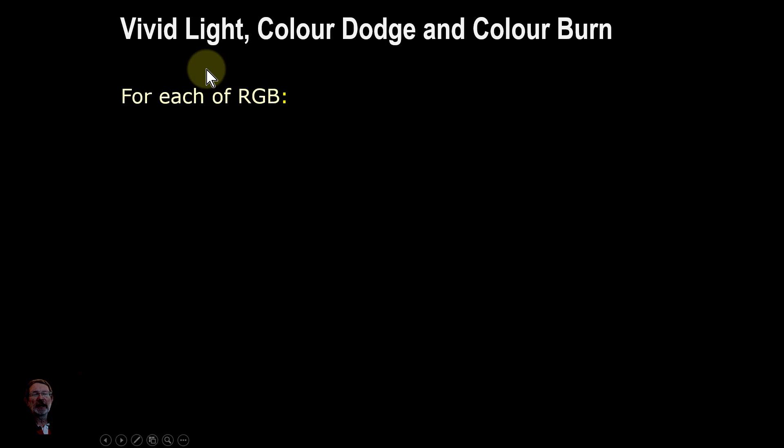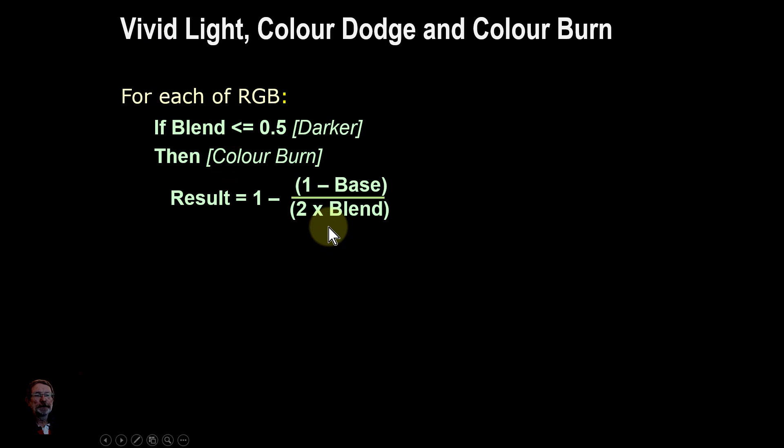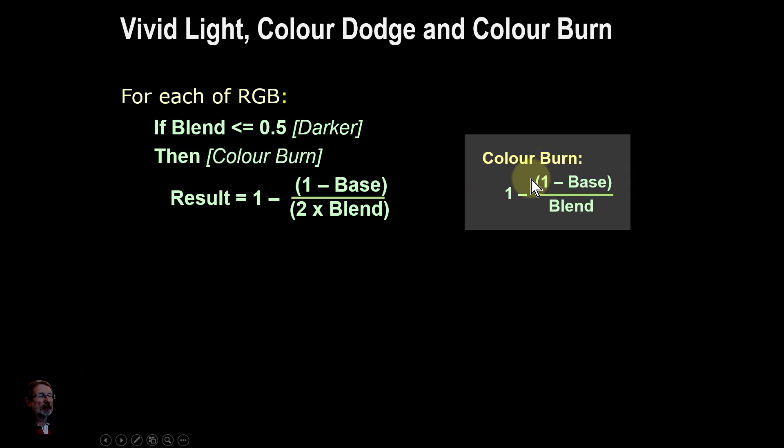Just for a moment, we're going to look at Vivid Light, which is the previous blend mode we looked at. And because this sets the scene, that says for each of red, green, and blue, if the blend, in other words the pixel for each of the red, green, and blue on each pixel of the blend layer, if it's darker, in other words it'd be lower than 0.5 because it goes from 0, which is black, to 1, which is white. Then we use a color burn calculation, which looks like this. However, the actual color burn is a calculation like this.